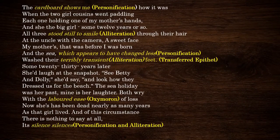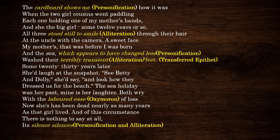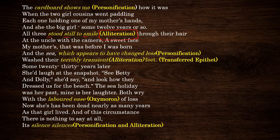When you look into the poem, the poetic device is very easy. The first poetic device I wanted to discuss with you is alliteration. What is alliteration? The letters beginning with the same letter — if the beginning letter of the words is the same, then it is alliteration. Here, 'all three stood still to smile' — that is why it is an alliteration.